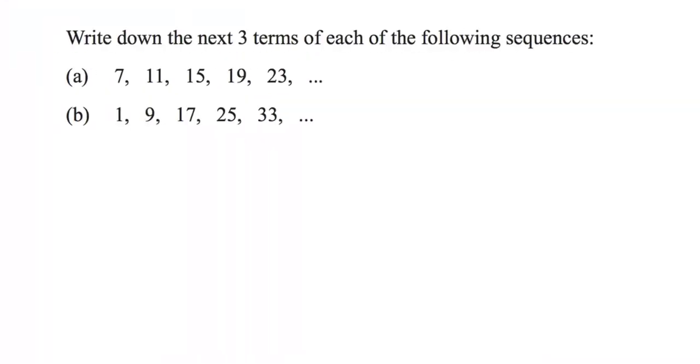Write down the next three terms of each of the following sequences. If you look at A, we should be able to spot some patterns and hopefully you can see it already. Similarly, we of course are going up by the same amount every time, we are adding four. So that means we've got to continue adding four to get the next terms.